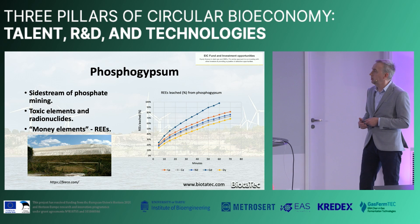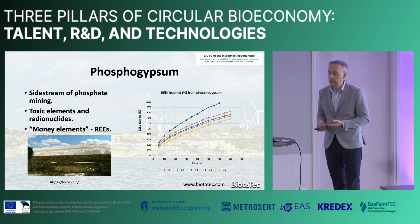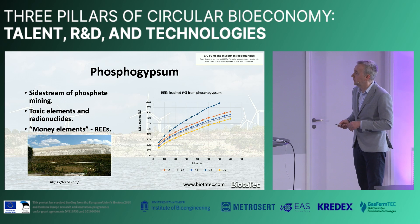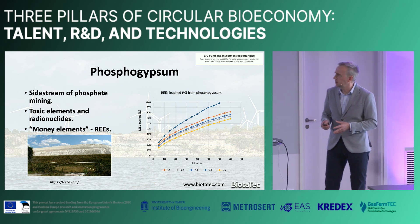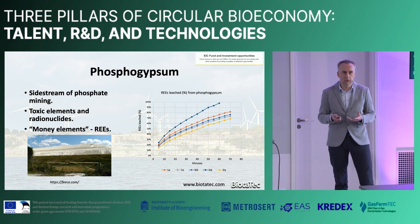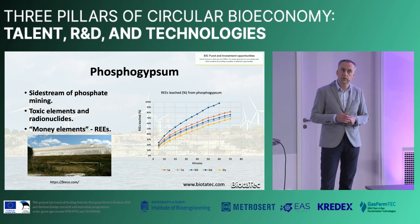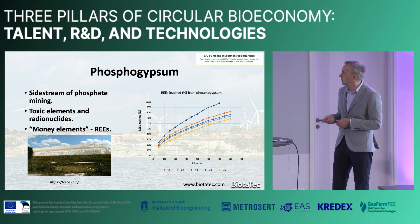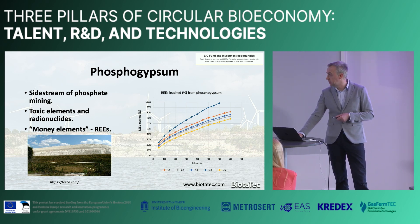Phosphogypsum is the side stream of phosphate mining — we need phosphoric acid production for fertilizers, and without phosphorus we can forget about contemporary agriculture. But it also contains toxic elements as well as radionuclides that move into the phosphogypsum, which means you cannot do anything with it — although it's a gypsum, you have to deposit it in these huge stacks as you can see. The valuable elements in that waste are rare earth elements, which are of course critically important for carbon-neutral energy production. On the right you can see a graph showing the ratio of rare earth elements extracted from phosphogypsum with our technology within one hour.